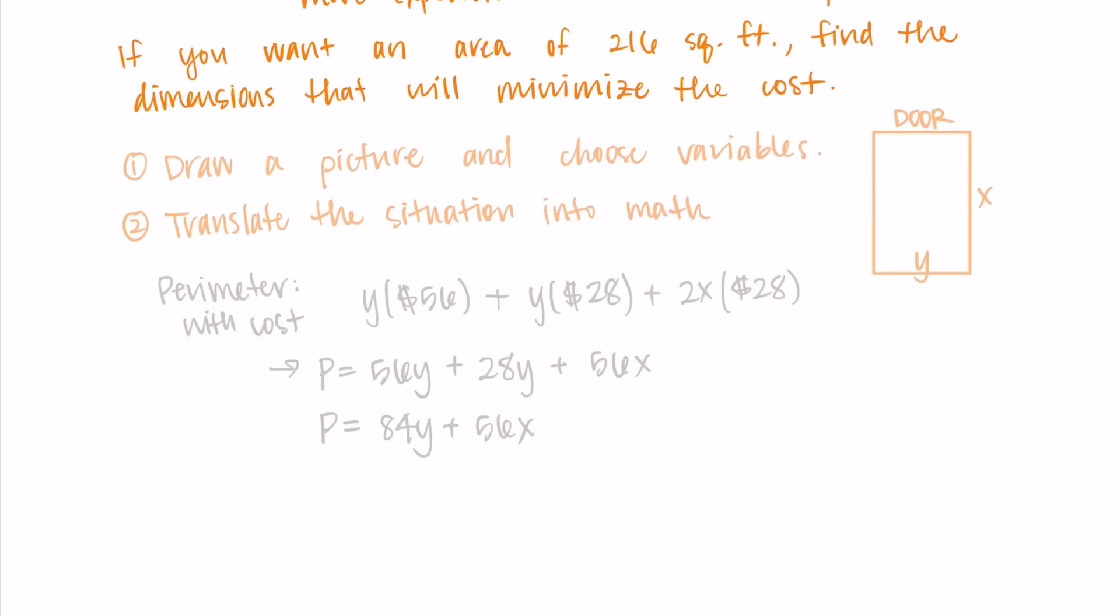The other equation I need to consider is the area. My area needs to be 216 square feet. So x times y is equal to 216. Since we're trying to minimize the cost, the perimeter with the cost is our objective equation. And we're constrained by the specific amount of area we need. So that is our constraint equation.